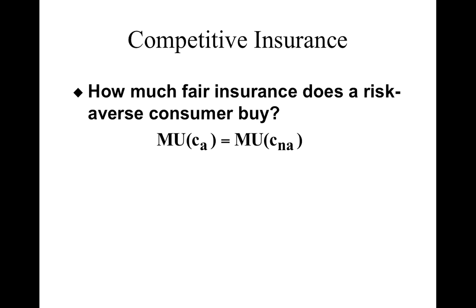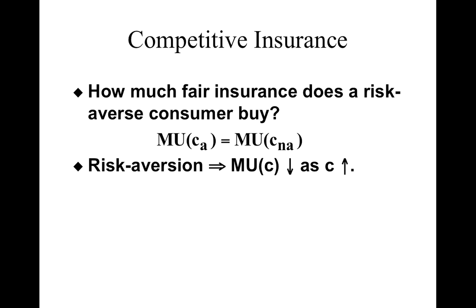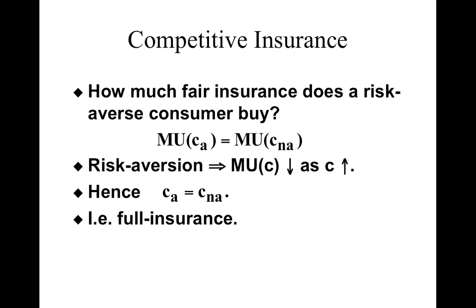So if consumption in the accident state is greater than consumption in the non-accident state, the marginal utility from the accident state is going to be greater than from the non-accident state, and vice versa. Furthermore, if the marginal utilities of income are equal at both consumption levels, it obviously means that consumption in the accident state must equal consumption in the non-accident state.